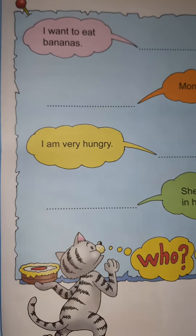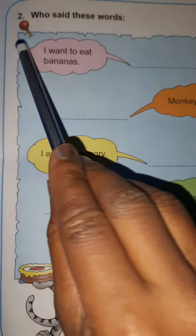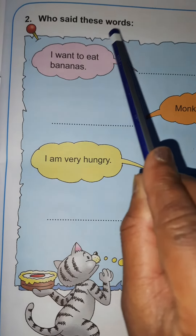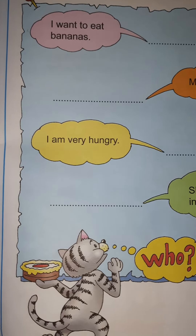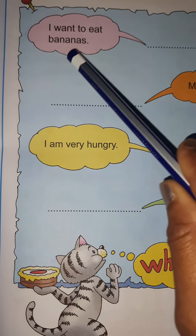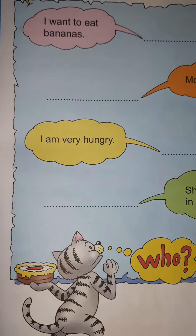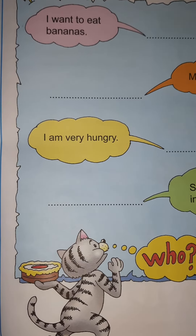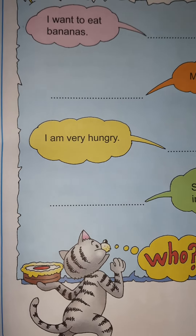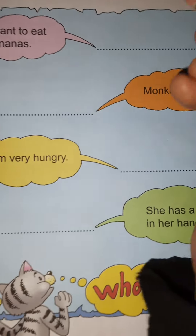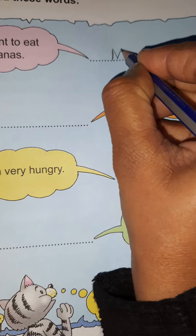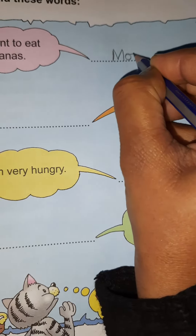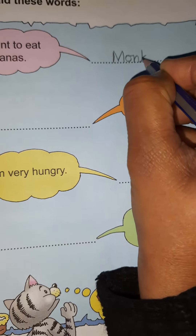Now come to the next page. Read the heading: Who said these words? Now read the pink box: I want to eat bananas. So children tell me, who said these words? Yes, right — Monkey. So write Monkey in the blank, like this.